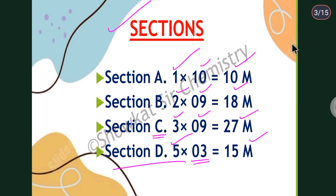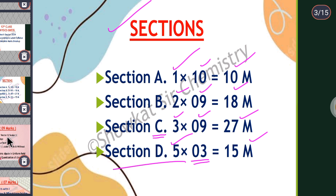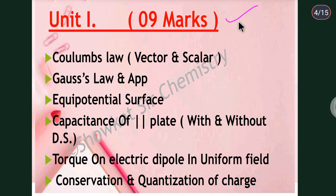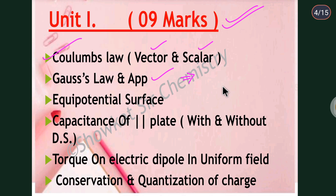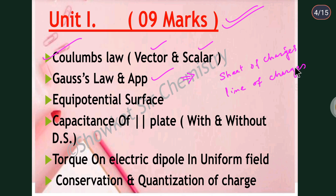Now let's start with Unit 1. It carries 9 marks and will be very important. The important topics are Coulomb's law — you should derive it in both vector and scalar form. Then we have Gauss's law and its applications: calculating the electric field due to a sheet of charges, a line of charges, and due to a spherical shell of charges.